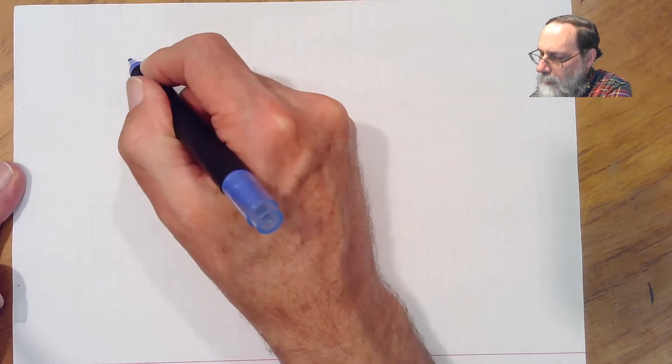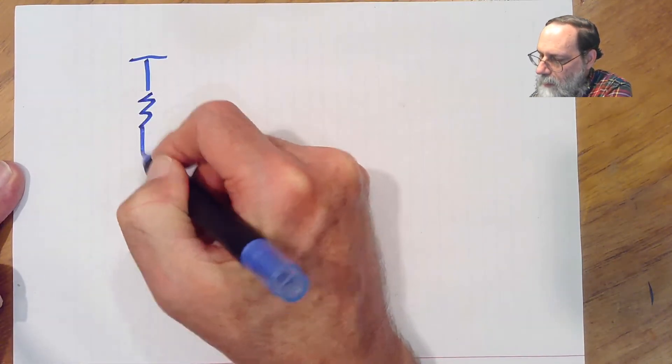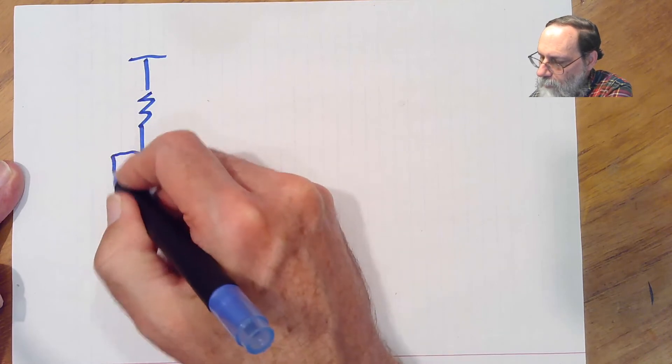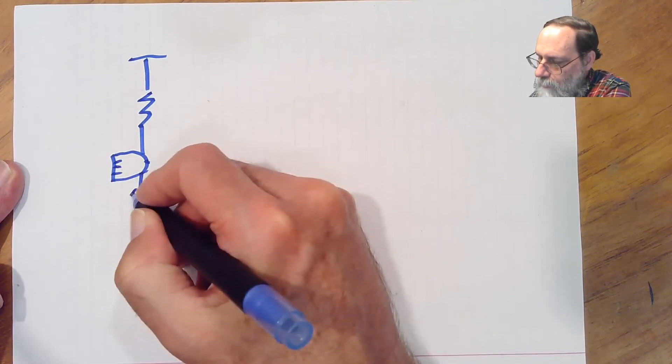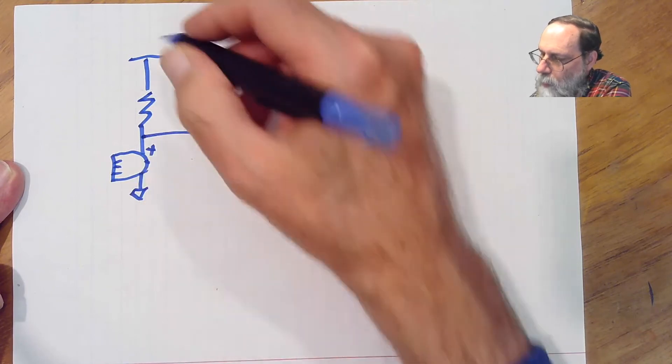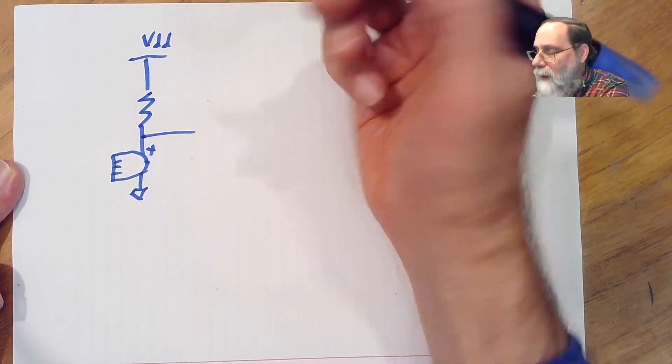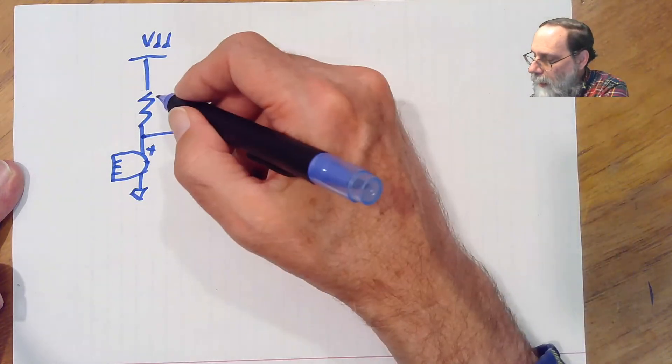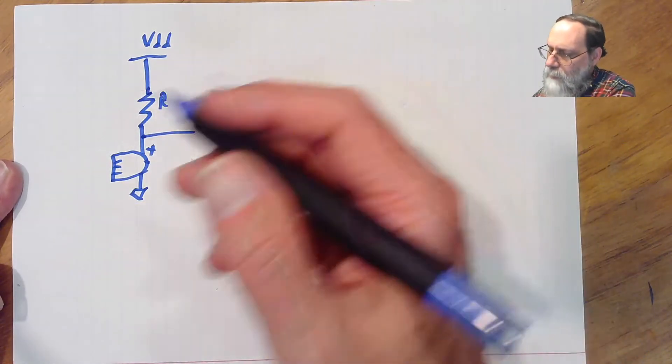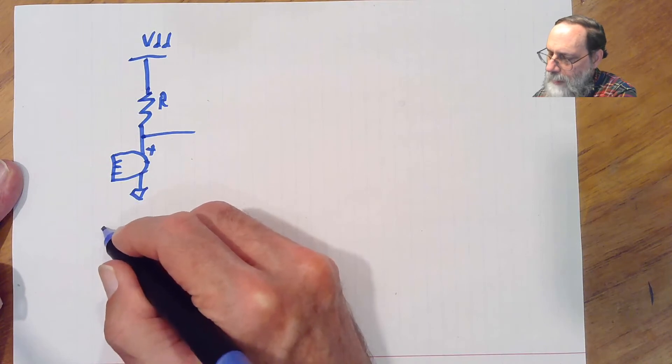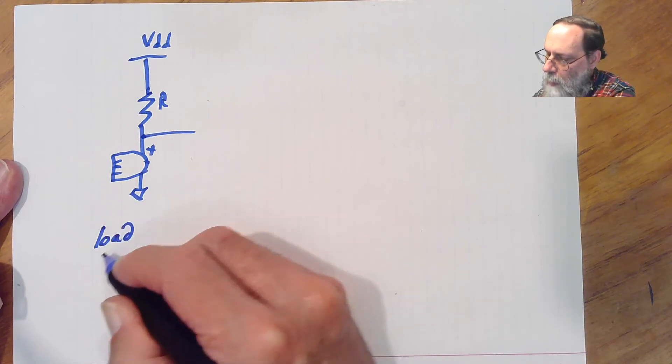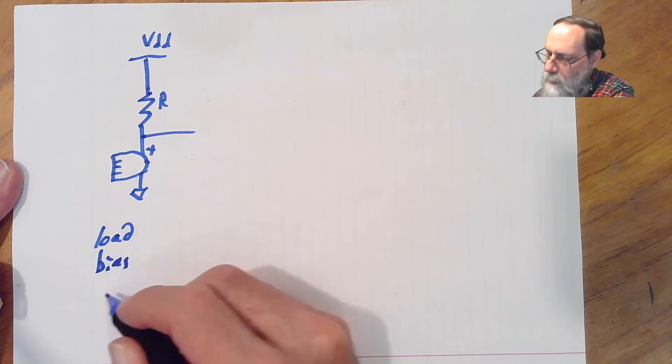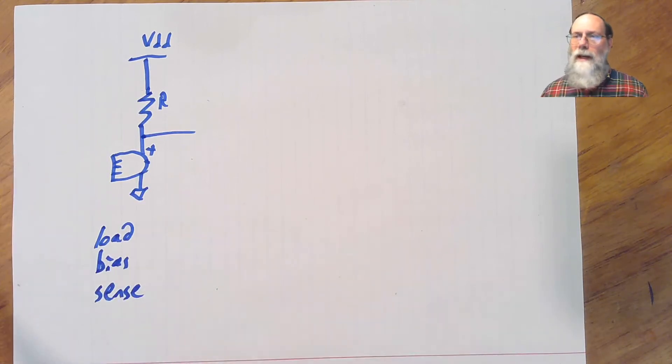The simplest bias circuit is a resistor and the microphone. We have power supply up here, what's called VDD. We have the resistor here. That resistor goes by several different names. It's called the load resistor or the bias resistor or the sense resistor. These different names for the resistor correspond to different ways of looking at what it's doing. They're all the same resistor.